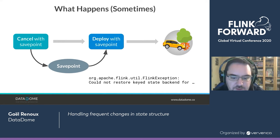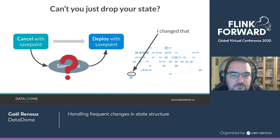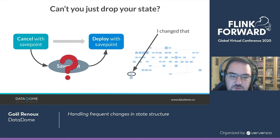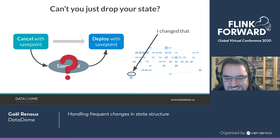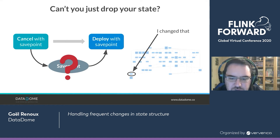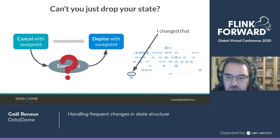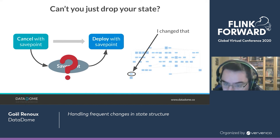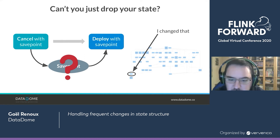You added a field or renamed something. So what can you do? One of the easiest things is to just drop the state and deploy from scratch. That's not great, because for us it means we're going to run in a degraded mode for a while — the time to rebuild our state. And most of the time our upgrade is just one operator. When I change just one operator in the whole job, I don't want to reset the state on everything — I want to reset the state on that operator only.